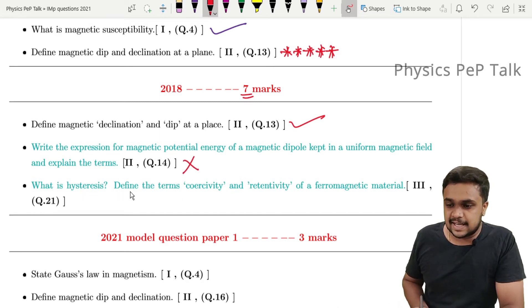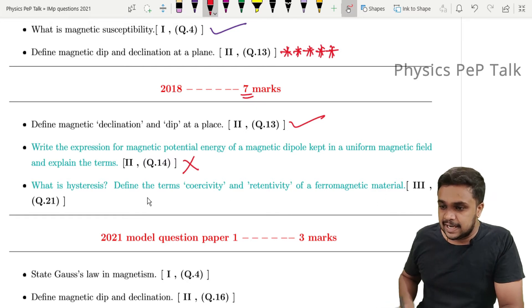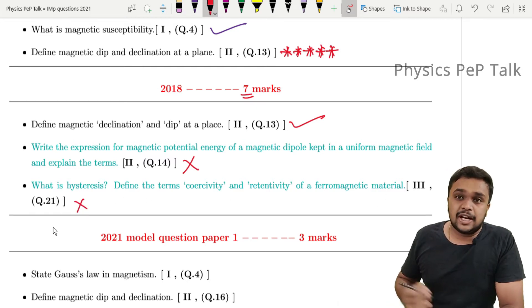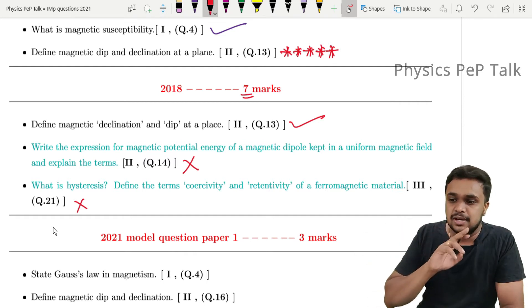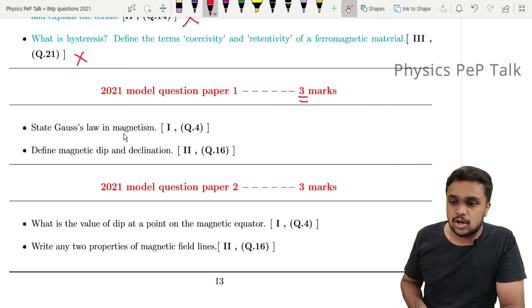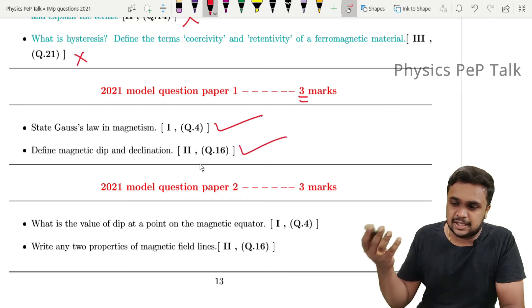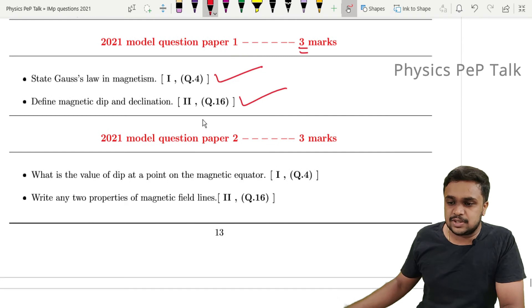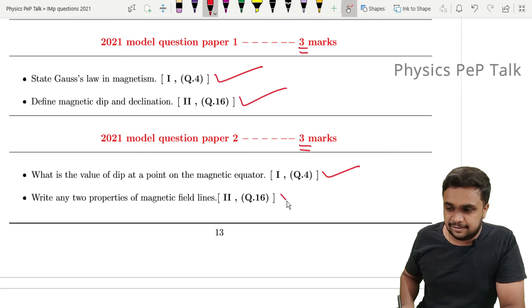'What is hysteresis? Define the terms coercivity and retentivity' - these are deleted portions, along with paramagnetic, diamagnetic, and ferromagnetic materials. From model papers: 'What is the value of dip at a point on the magnetic equator?' and 'Write any two properties of magnetic field lines.'